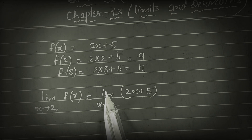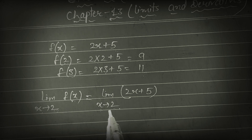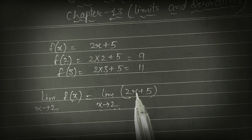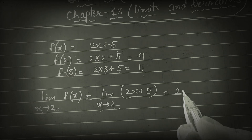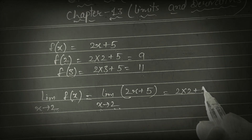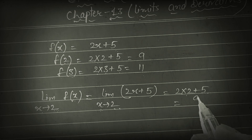Limit x tends to 2 means x approaches 2. x ki value 2 ko approach kar rahi hai — that means we can put 2 here. So we get 2×2 + 5, which is 4 + 5 = 9.